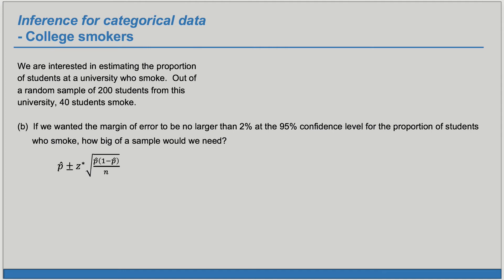We're looking at a proportion. The confidence interval has the general formula, and the margin of error is what comes after the plus or minus. We want this to be no larger than two percent. That is, we want this to be less than or equal to 0.02, and we want to find the smallest n that will satisfy this.